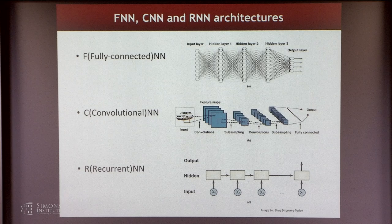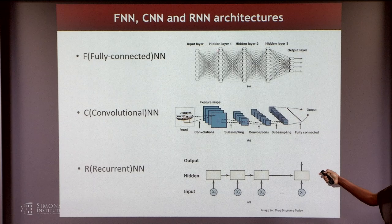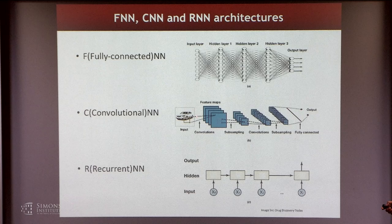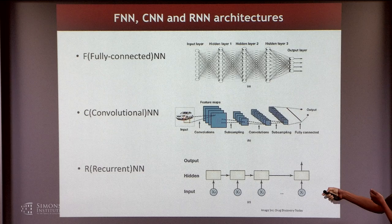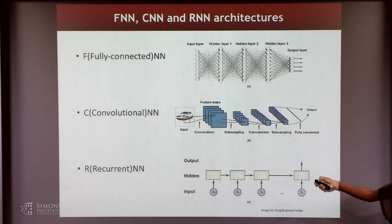Just to bring home the point: fully connected networks start with some high-dimensional input and every node in a layer is connected to all nodes in the previous layer — fully connected throughout, with lots of parameters to tune. Convolutional neural networks instead apply a convolutional filter to parts of the input, so every subsequent node only depends on a subset of input nodes. That's the convolution structure — a spatially local structure — followed sometimes by different pooling layers: subsampling, max pooling, average pooling, and repetitions of convolutions and subsampling.